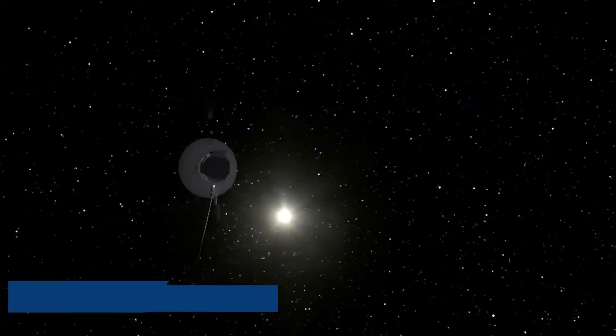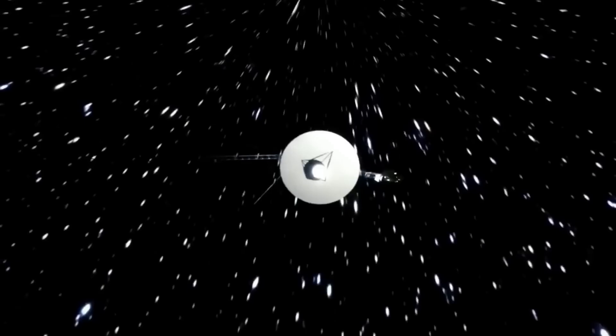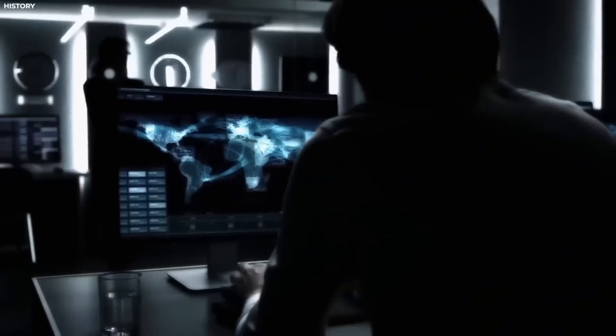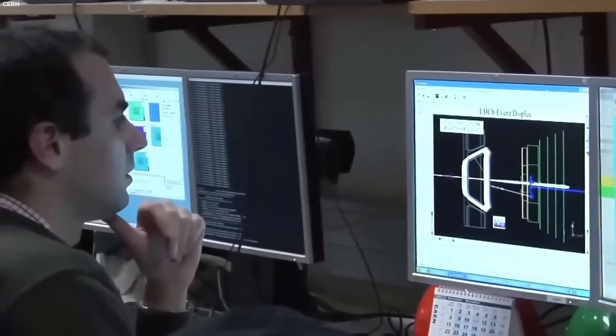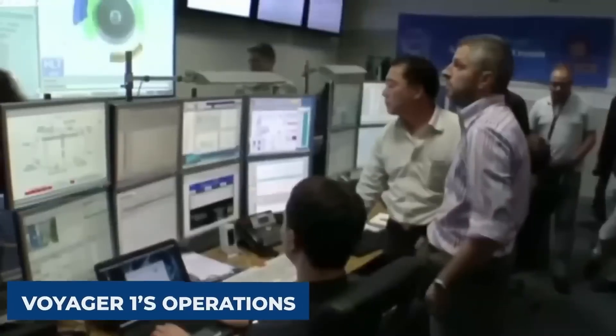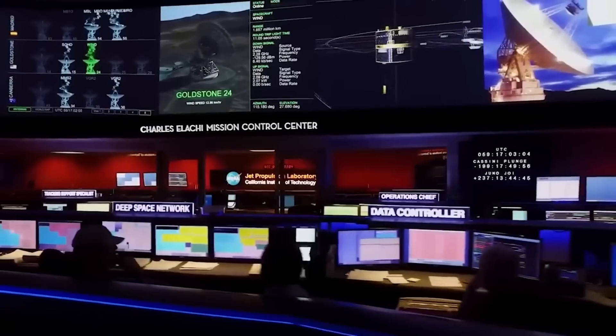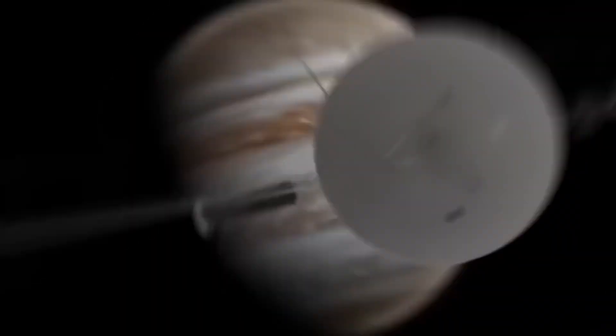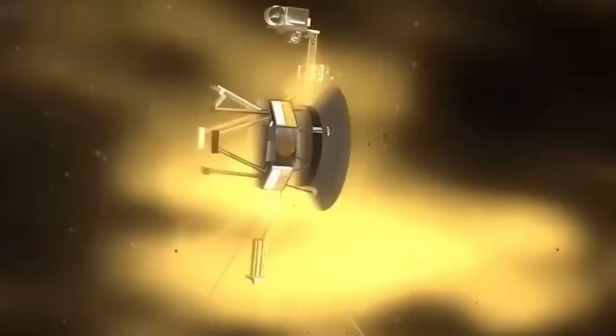One of the challenges in dealing with this problem is the vast distance between Voyager 1 and Earth. Because Voyager is in interstellar space, a signal or light takes 20 hours and 33 minutes to travel one way, meaning that it takes over 41 hours to send a message to Voyager and receive a response.